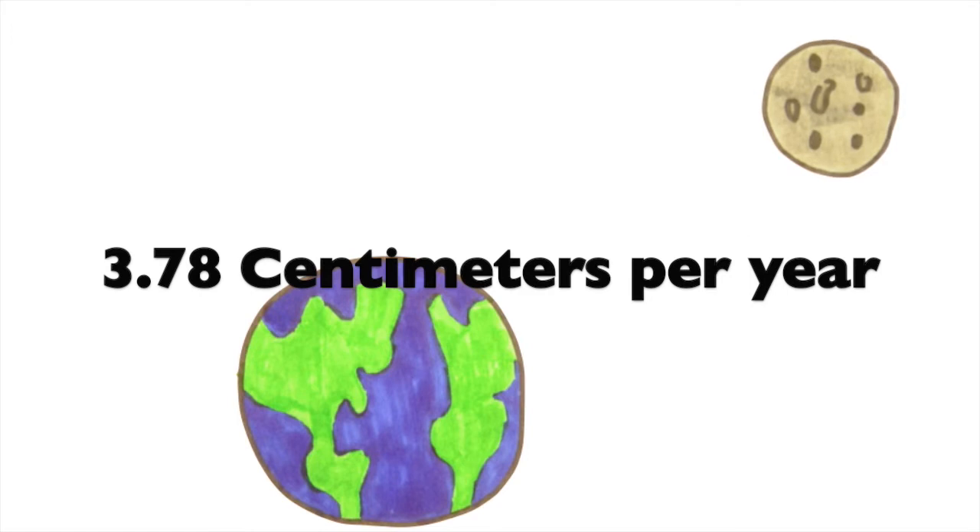By measuring the time it takes for the light to get there and back, we can figure out the distance between the Earth and the moon. Although the data shows that the moon's Earth distance cycles, on average the moon is moving further away from the Earth at a painfully slow rate of 3.78 centimeters per year.